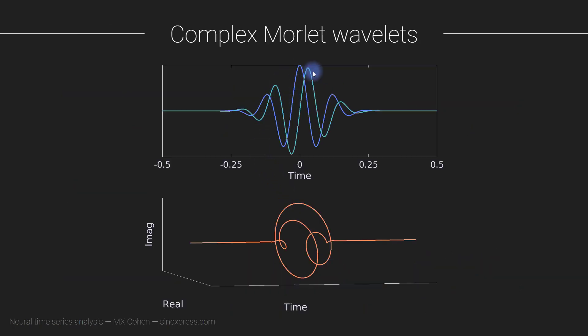You already learned about Morley wavelets, and I've mentioned that we will be using complex-valued Morley wavelets, not real-valued Morley wavelets. A complex-valued Morley wavelet, just like a complex-valued sine wave, has two parts: the real part and the imaginary part. The real part corresponds to a cosine, and the imaginary part corresponds to a sine. The imaginary part looks a little wobbly, while the real part looks more steady and firm.